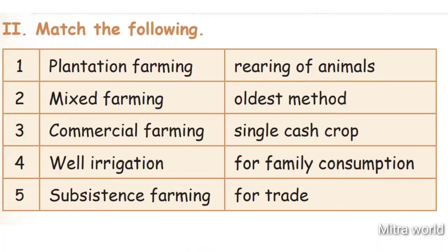Next: Match the following. One side we have: Plantation farming, Mixed farming, Commercial farming, Well irrigation, Subsistence farming. Other side: Rearing of animals, Oldest method, Single cash crop, For family consumption, For trade.